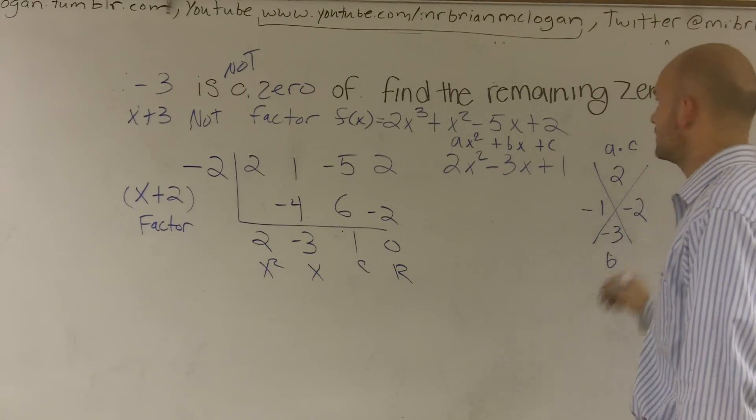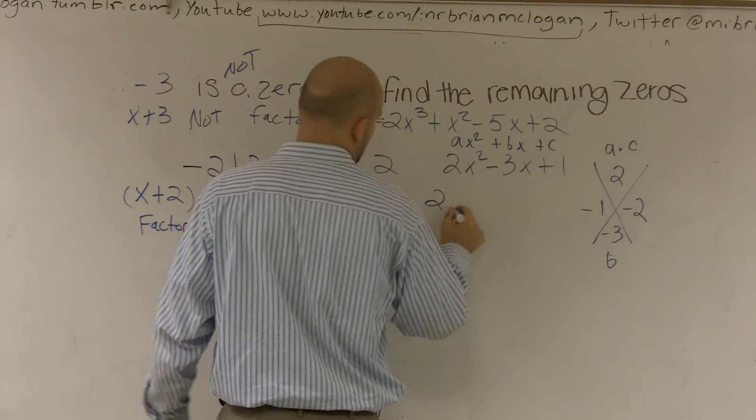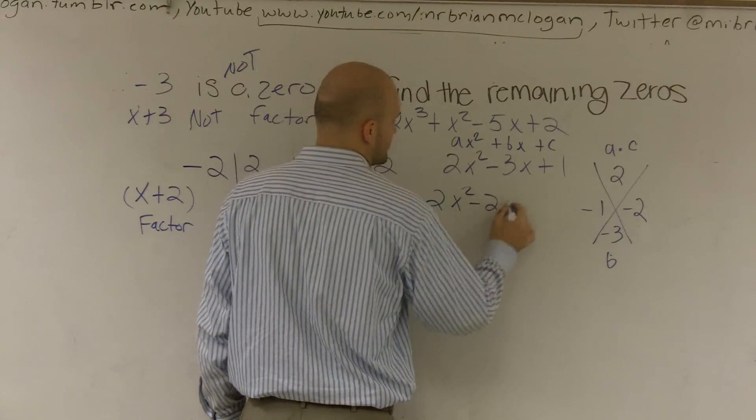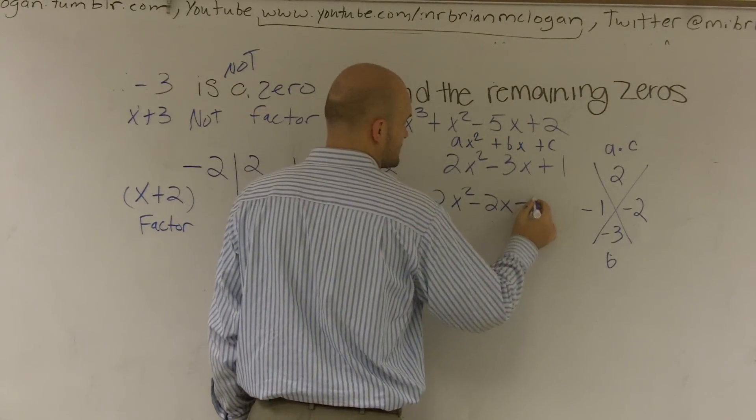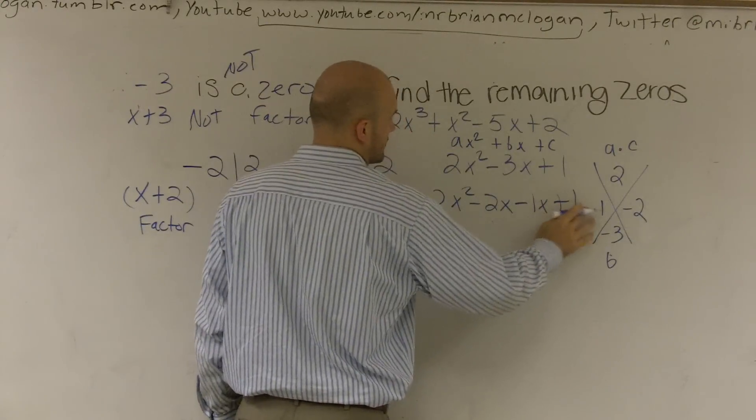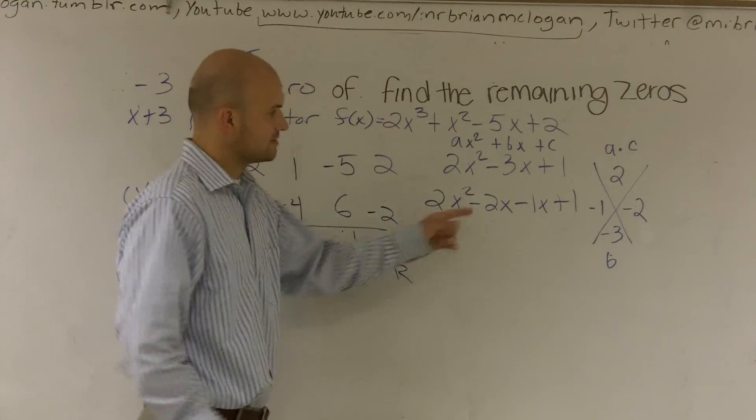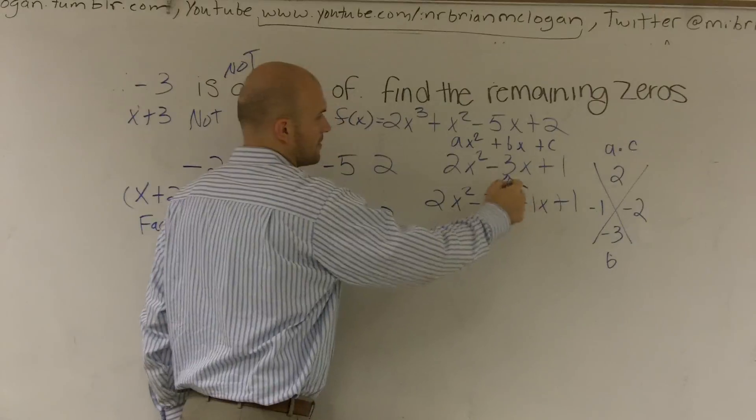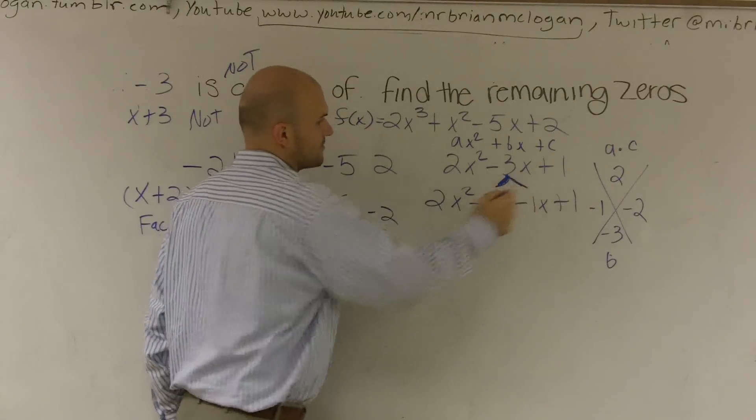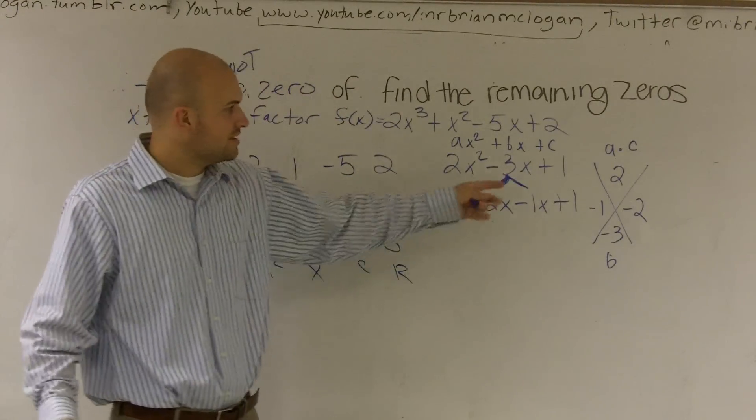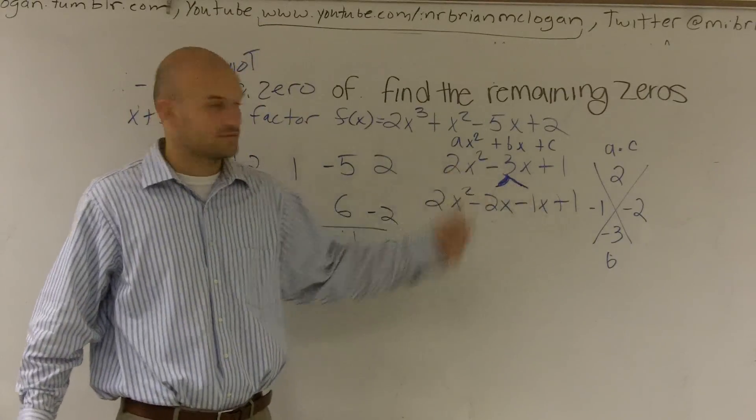A times c is 2, b is negative 3. So what two numbers multiply to give you 2? Negative 1, negative 2. So then what I do is I rewrite it as 2x squared minus 2x minus 1x plus 1. All I did was, see how this, I just rewrote my middle terms. I didn't change anything. I just started writing negative 3. I wrote negative 2x and negative 1.